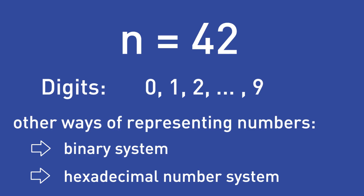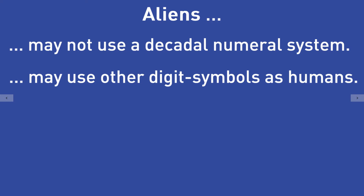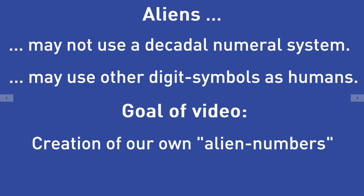If we met an alien, it would be likely that the alien represents numbers in a different way than we do. It could happen that it doesn't use the base ten numeral system we are used to. Because the symbols for our digits — 0 to 9 — were created on earth, it is also likely that an alien uses its own digit symbols for representing numbers according to some numeral system.